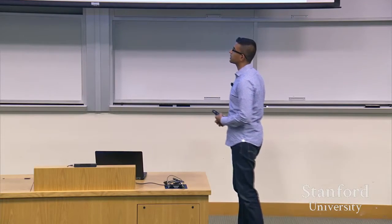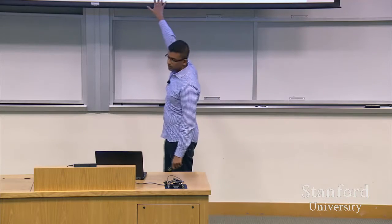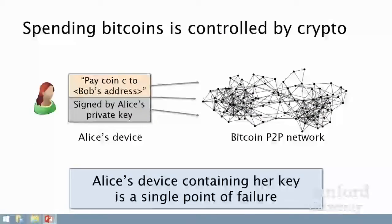That's basically all you need to know about how Bitcoin works. But here's where the whole security challenge comes from: Alice's device — her computer or phone — on which she controls her secret key, becomes a single point of failure. If she has malware on her device, that malware can steal all her keys, and she loses her entire Bitcoin wallet. And that's a problem.